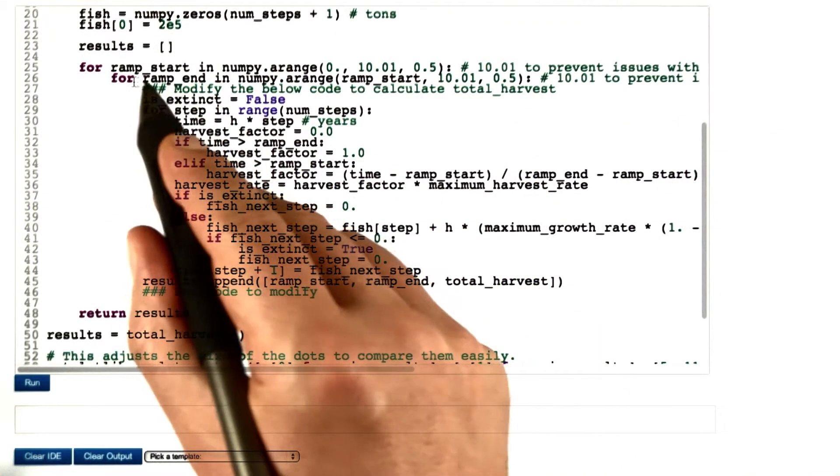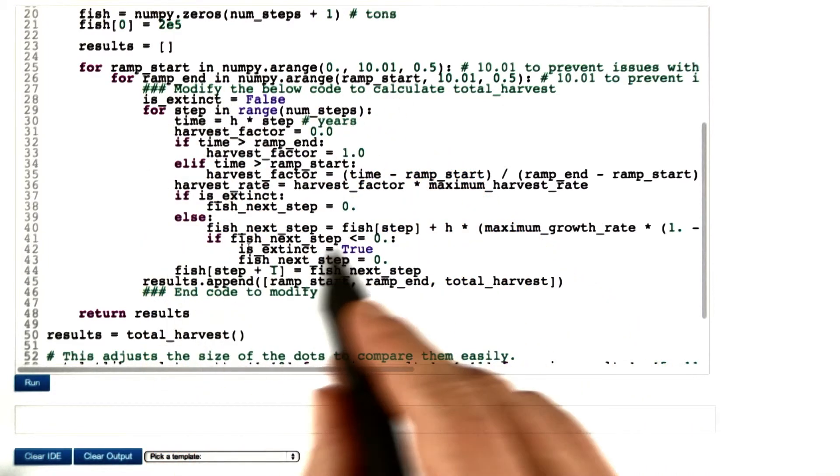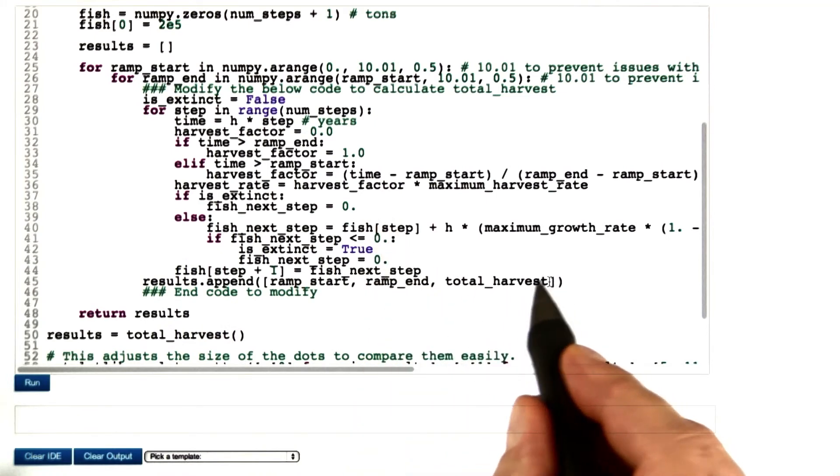The stepping of these two parameters that control the ramp process is already done. Your job is to compute the total amount of harvest and return it in this variable.